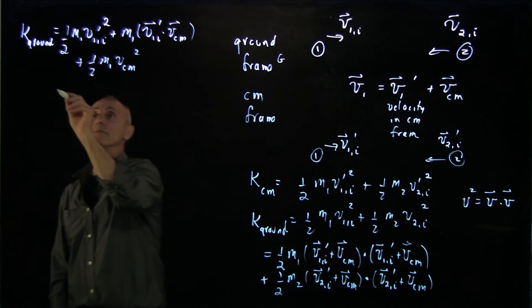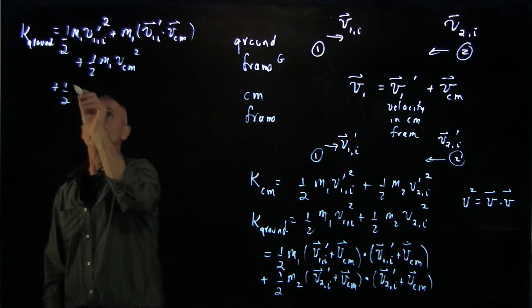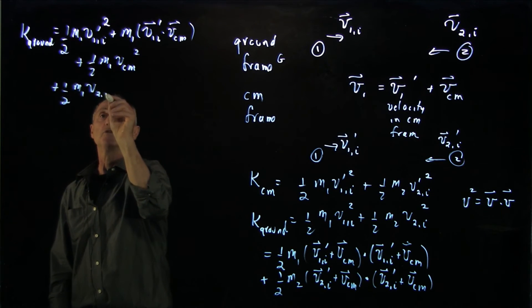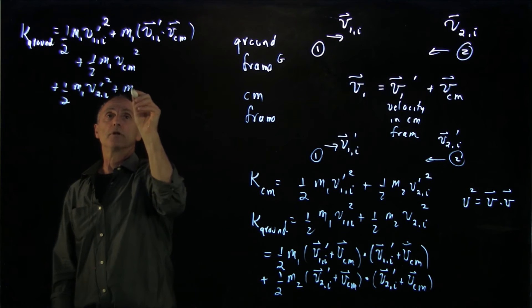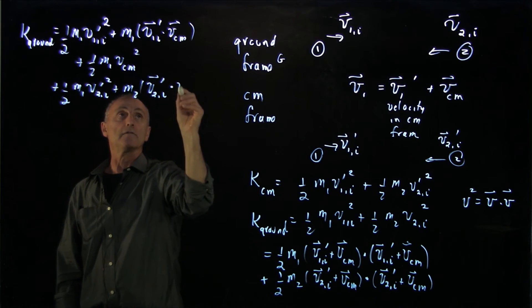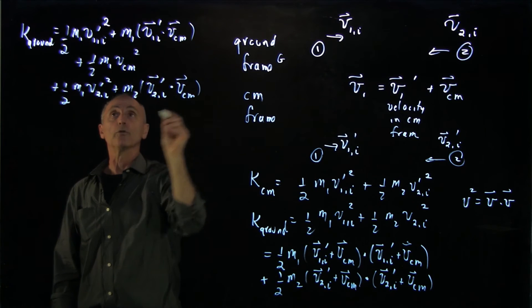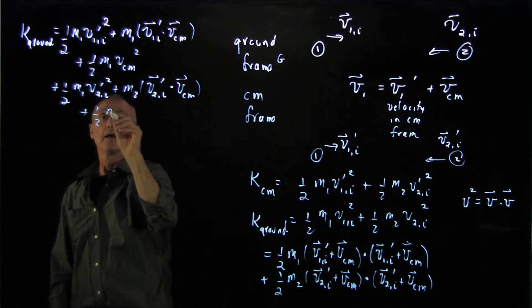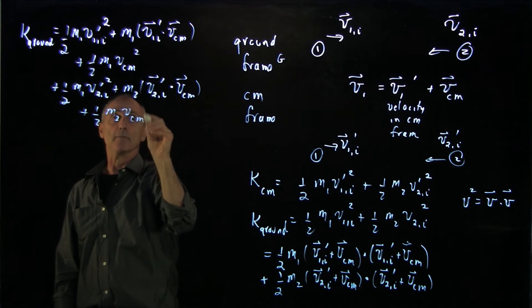Now I have exactly the same thing on the next one. So we'll write that down, 1 half m2 v2i prime squared, plus m2 v2i prime dot vcm, that's the same in both, plus 1 half m2 vcm squared.